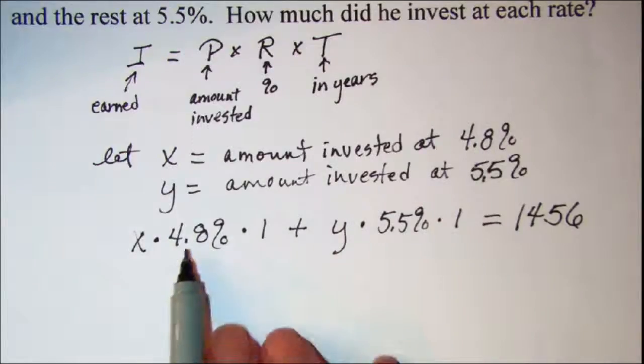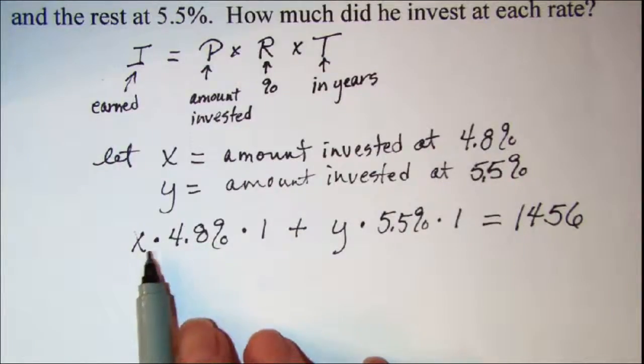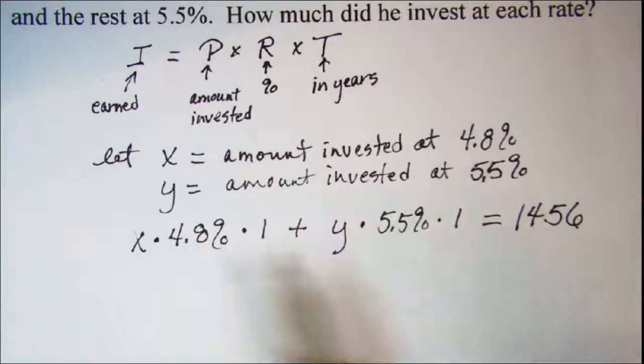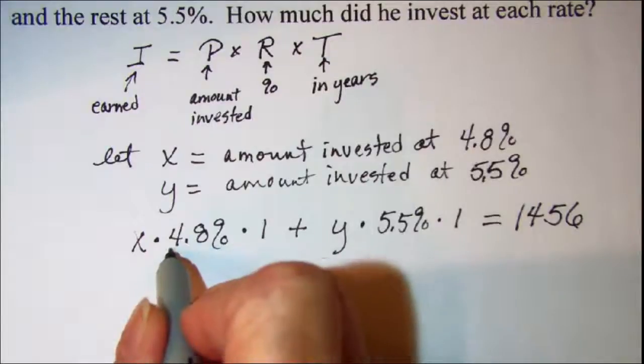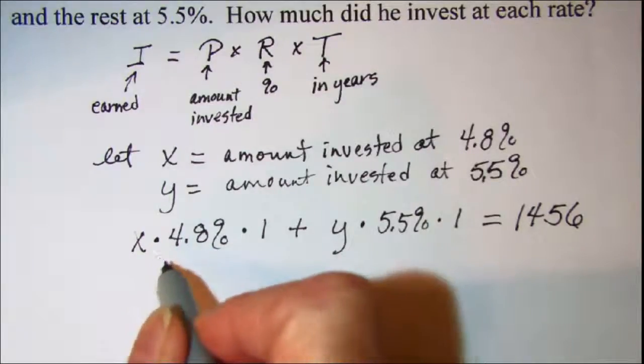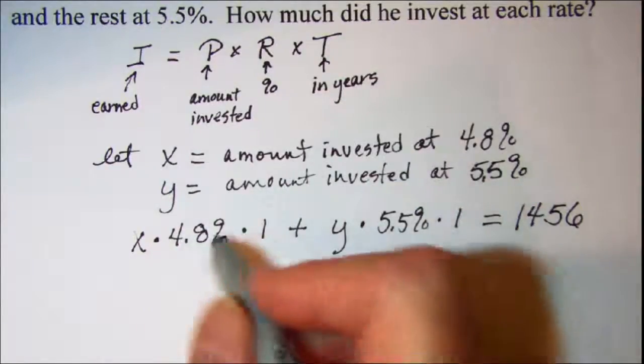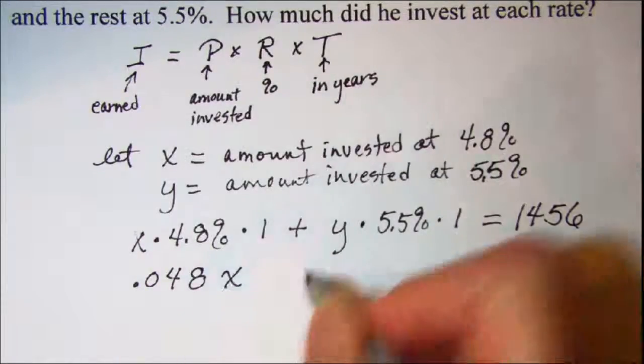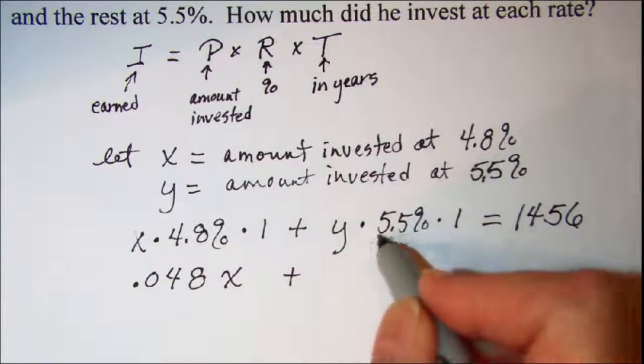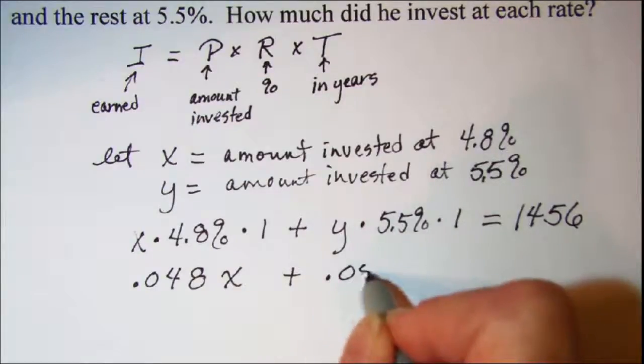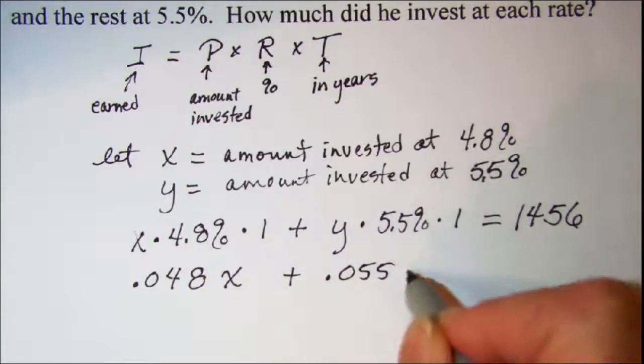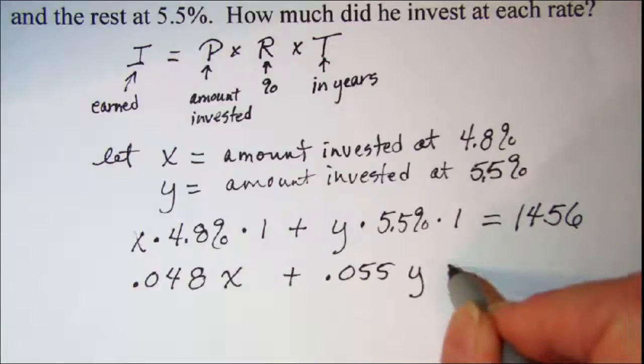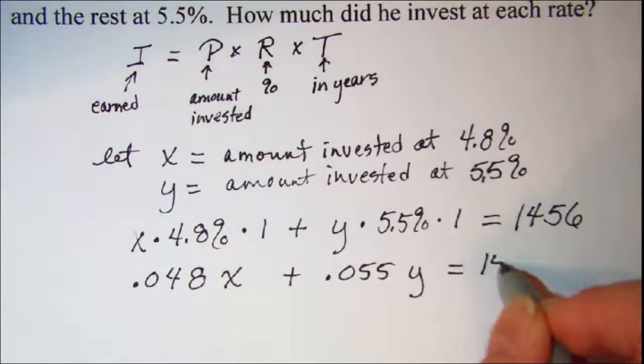Now let's simplify this. We'll write each of these percents as decimals. So remember we move our decimal to the left two places. So this is 0.048 times x plus 0.055 times y equals 1456.